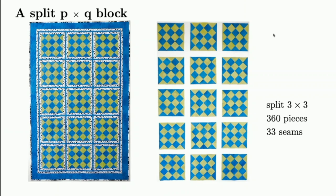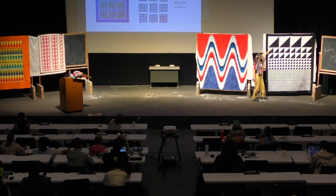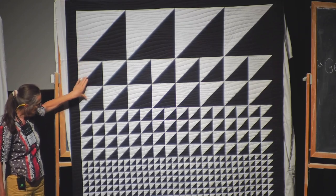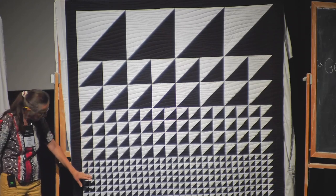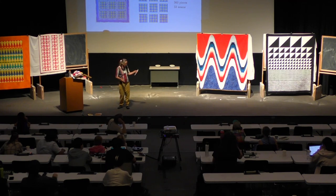In split p×q blocks, the corners have two colors. The traditional name for a split one-by-one block is half-square triangle — perhaps more descriptive. In this particular block there are: four half-square triangle blocks of size 16 inches, four squared of size 8 inches, four cubed of size 4 inches, four to the fourth of size 2 inches, and four to the fifth of size 1 inch — a total of 2,728 triangles.